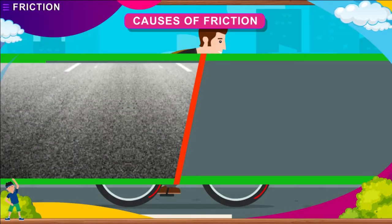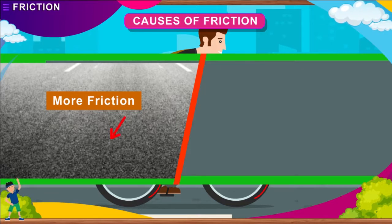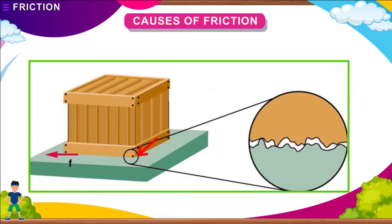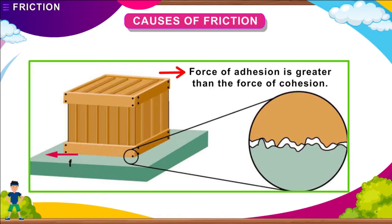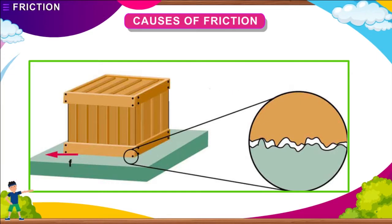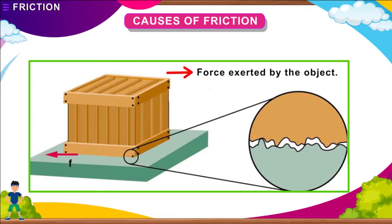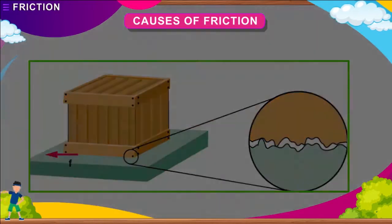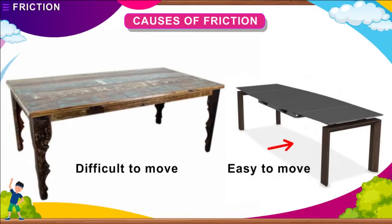This clearly shows that friction is more when the surface is rough and less when the surface is smooth. Friction also depends on the interlocking of two surfaces — if the force of adhesion is greater than the force of cohesion, the friction is more, and vice versa. A third factor is the force exerted by the object: the greater the force, the greater the friction. This is why it is more difficult to move a heavy table than a light one.